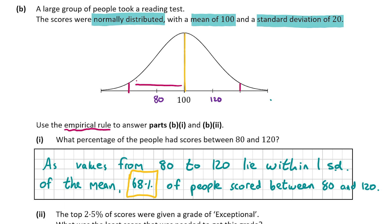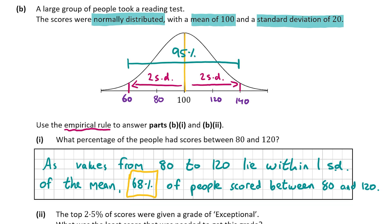Two standard deviations from the mean on each side: since one standard deviation is 20, two will be 40. So 100 minus 40 gives us 60 on the lower side, and 100 plus 40 gives us 140 on the upper side. The empirical rule says that between 60 and 140 we have 95% of all values, which leaves the other 5% — with 2.5% lower than 60 and 2.5% higher than 140.